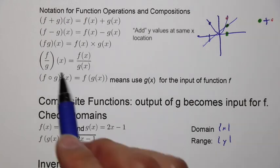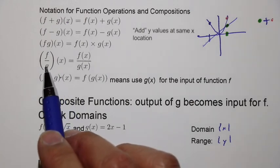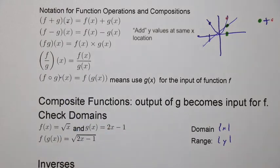Please keep in mind of the domain restrictions. For example, when you have a g on the bottom, you have to make sure that you can solve g of x equals zero, because you can't divide by zero. You also have to check to see if there's any square roots, because the radicand has to be non-negative.